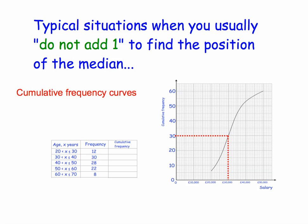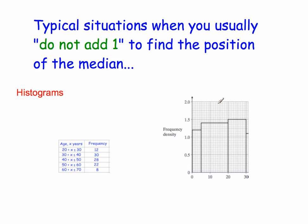The final situation where you typically don't add one is histograms. Whenever you're estimating the median from a histogram — and 'estimating' is a key word to look out for — a histogram is drawn for grouped continuous data. Because the data is grouped and you don't know the exact numbers, adding one or not makes little difference. For example, with frequencies 12 + 30 + 28 + 22 + 8 = 100 numbers, you would just go for the 50th value by dividing by 2.